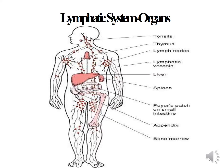Lymphoid tissues and the lymphoid system. The different organs in the lymphoid system include tonsils, thymus, lymph nodes, lymphatic vessels, liver, spleen, Peyer's patches on the small intestine, appendix, and bone marrow.